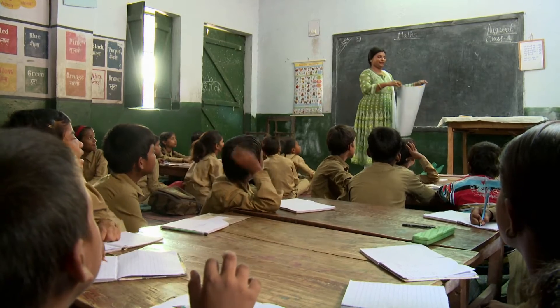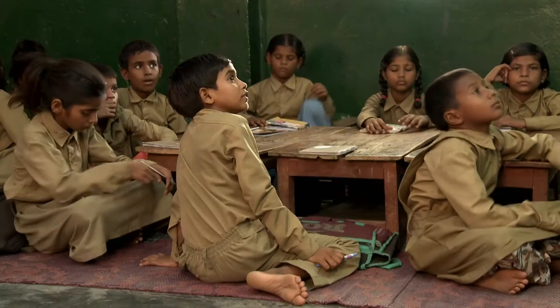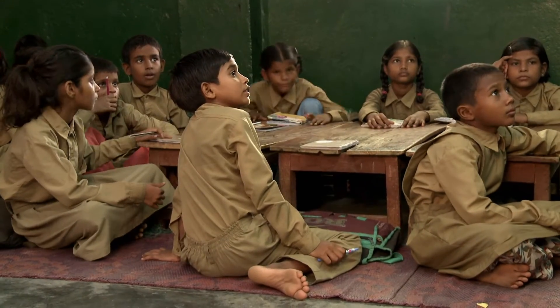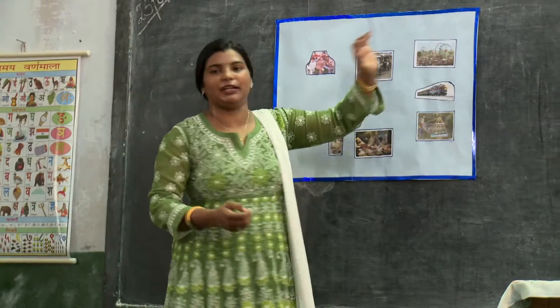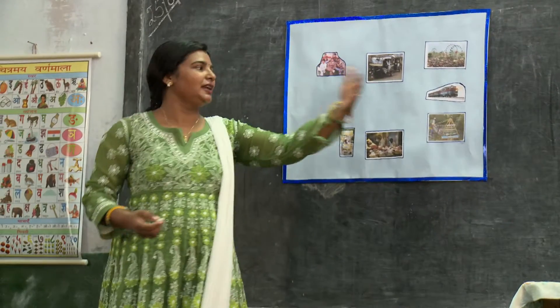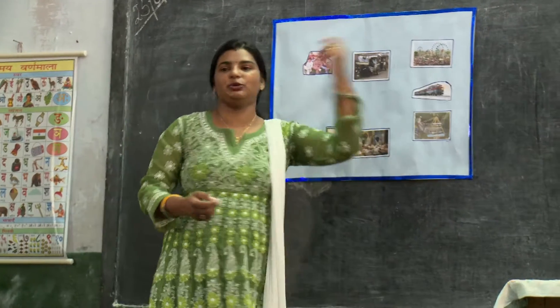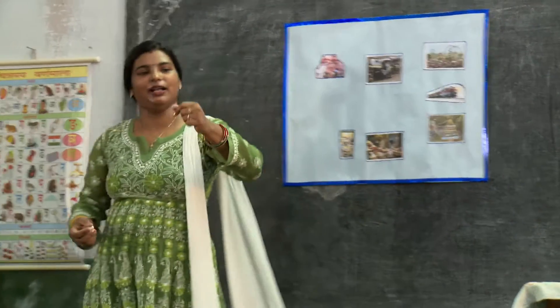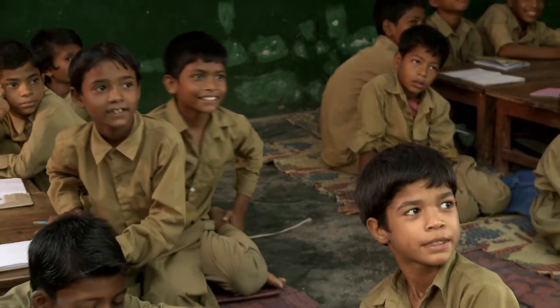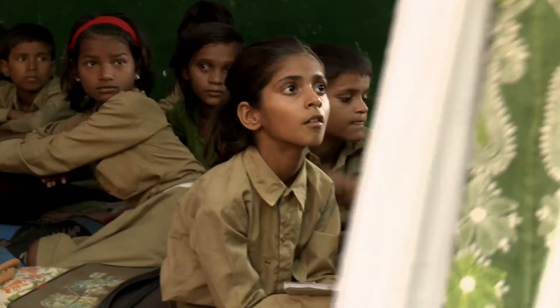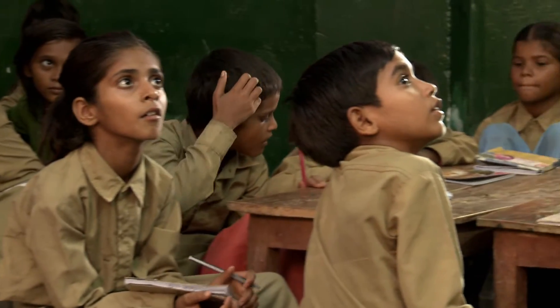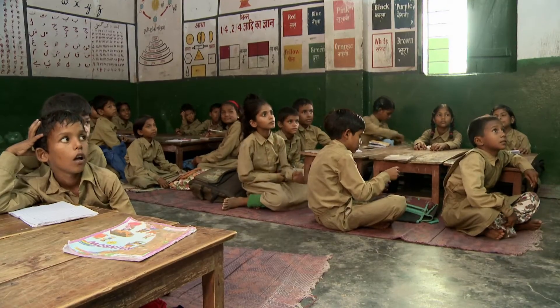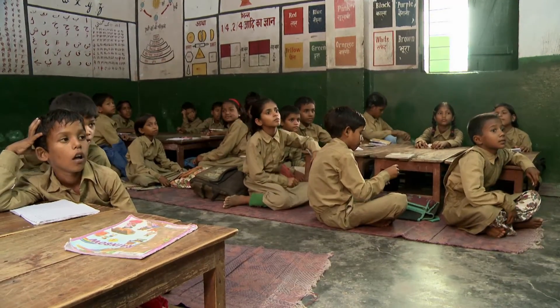In this primary class, a teacher explores using a story to engage her students in number work. The story starts with five friends going to the village fair, each with 200 rupees to spend.